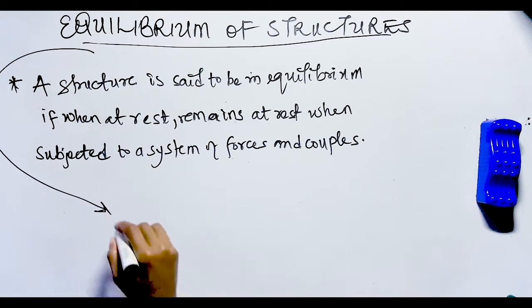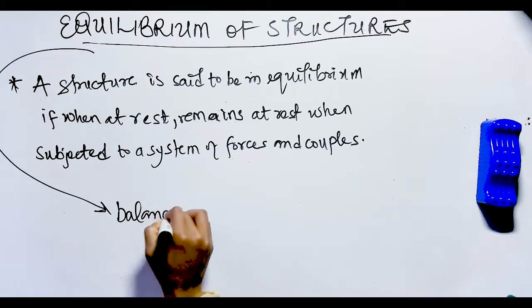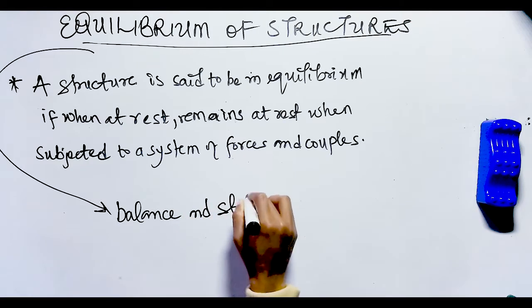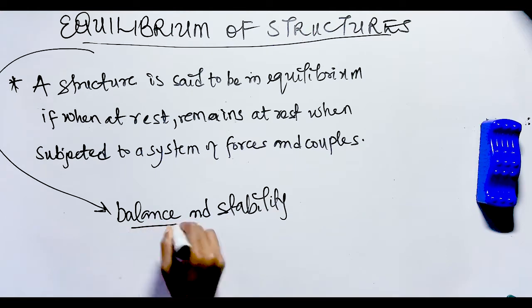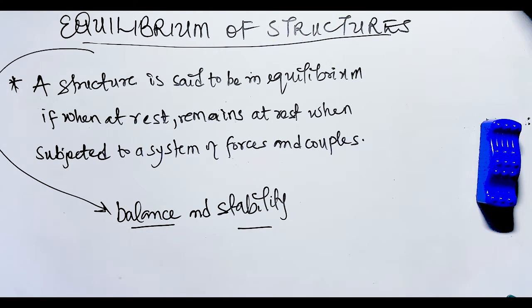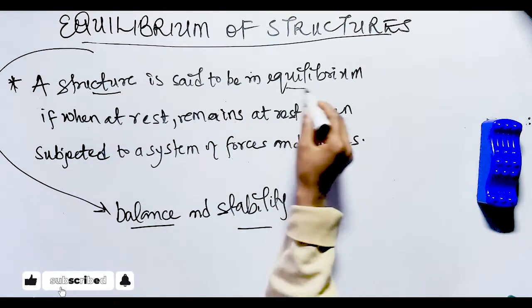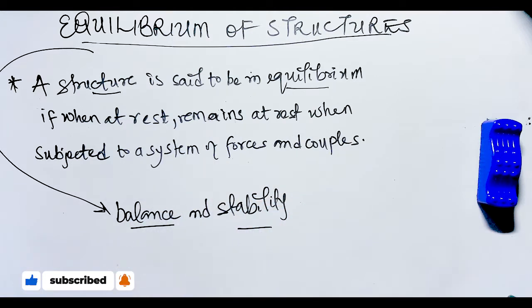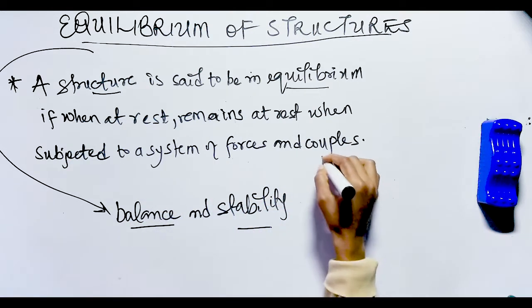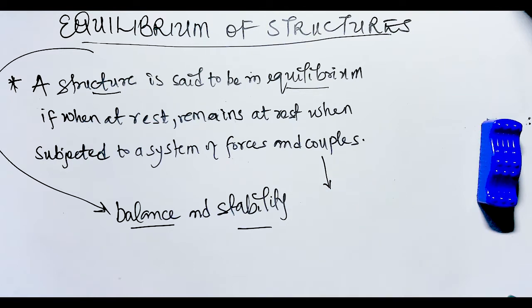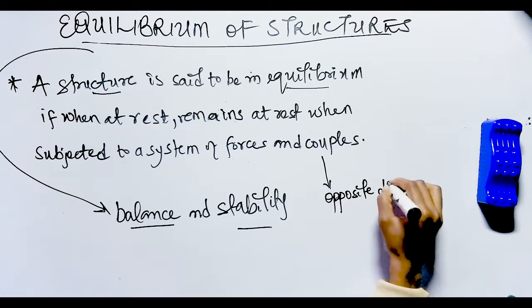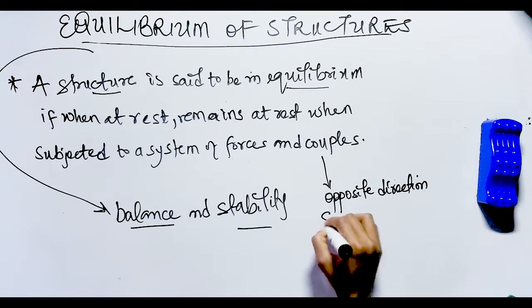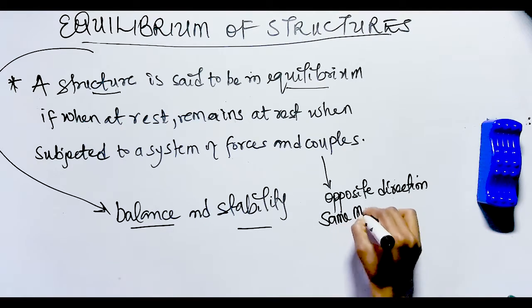Starting with equilibrium of structures — equilibrium is a word synonymous with balance and stability. So if a structure is in equilibrium, all its members and parts are balanced and stable. A structure is considered to be in equilibrium if, when at rest, it remains at rest when subjected to a system of forces and couples. A couple is a pair of equal parallel forces acting in opposite directions with the same magnitude but not sharing a common line of action.